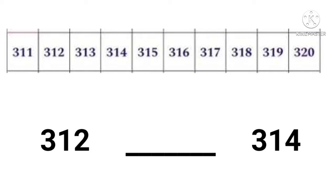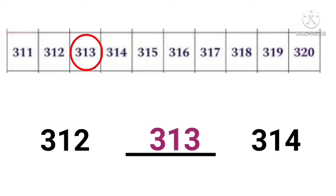Three hundred and twelve and three hundred and fourteen — what number comes in between three hundred and twelve and three hundred and fourteen? It is three hundred and thirteen.